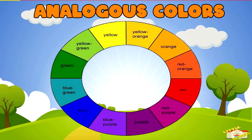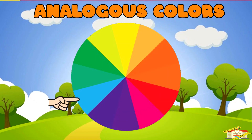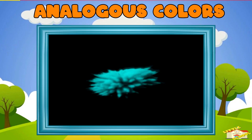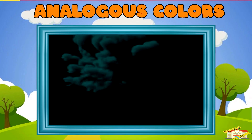Analogous colors. Analogous colors are colors next to each other on the wheel. An example would be blue, blue-green, and green. Together, these three create harmony.